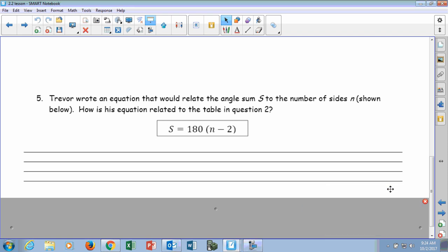So where we left off from last time was we basically talked about the angle sum formula. The sum equals 180 times the quantity n minus 2, where n was the number of what?